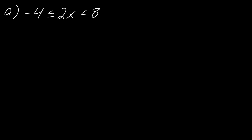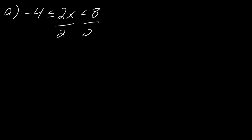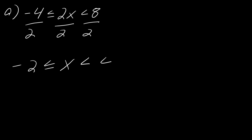For three-part inequalities, like -4 ≤ 2x < 8, just focus on getting x by itself in the middle and do the same operation to all three sides. If this were just 2x < 8, I'd divide by 2 — so divide all sides by 2. This gives -2 ≤ x < 4. That's all you have to do with three-part inequalities.